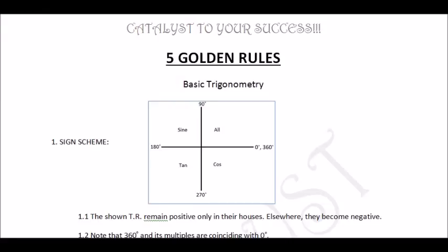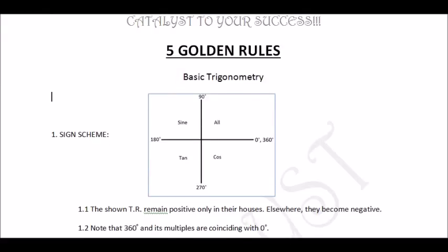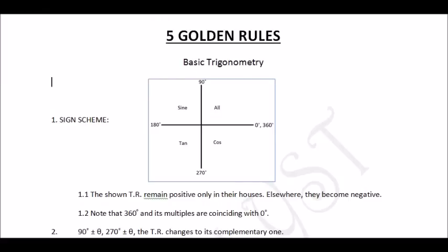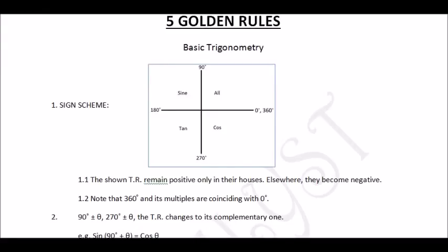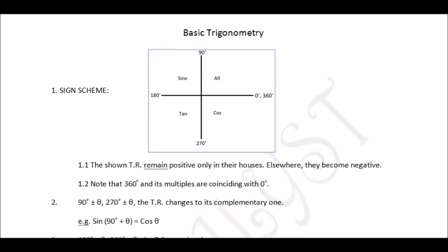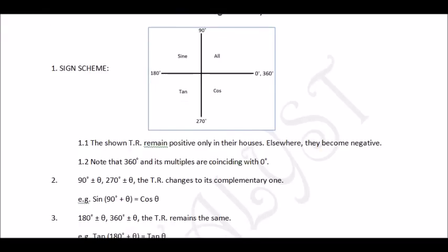Another important rule: whenever we deal with sin(90° ± θ), cos(90° ± θ), or any trigonometrical ratio with 270° ± θ, the trigonometrical ratio changes to its complementary one. For example, sin(90° + θ) becomes cos θ, tan(90° + θ) becomes cot, and sec(90° + θ) changes to cosec. The same applies for 270° ± θ — the ratio changes.